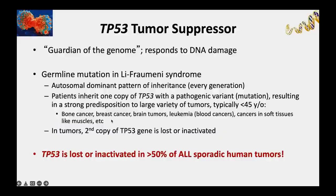These individuals have inherited one copy with a mutation, but remember tumor suppressor genes require losing both copies—like losing front and rear brakes—to promote tumor formation. So these individuals have inherited one mutant copy, and when one cell loses the second copy, that cell can start to proliferate when it shouldn't—explaining their predisposition to cancer.